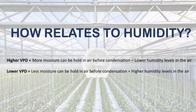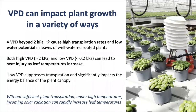If you are used to working with relative humidity levels, you are probably asking yourselves how you can relate relative humidity levels to VPD. It's simple. Higher VPD levels mean more moisture can be held in the air before condensation, meaning low relative humidity levels are present. On the other hand, low VPD levels are related to a situation where less moisture can be held in the air before condensation, meaning relative humidity levels are higher.